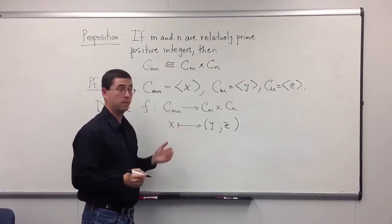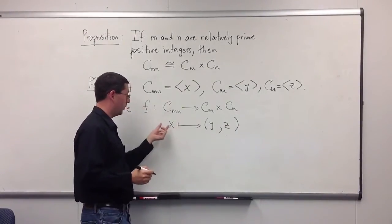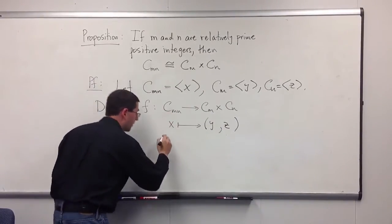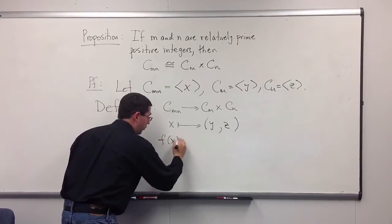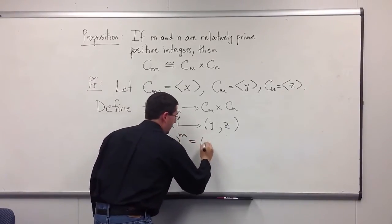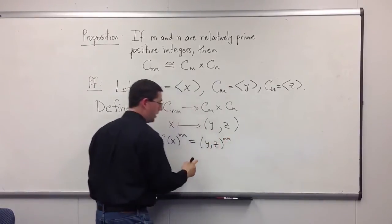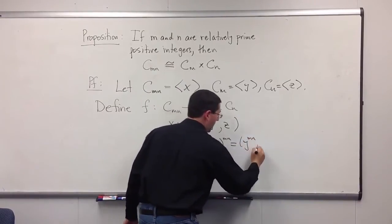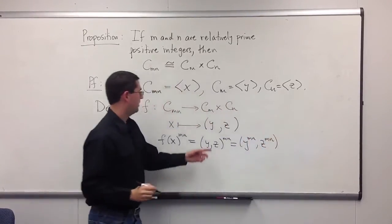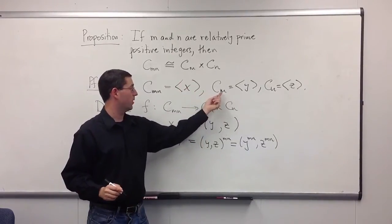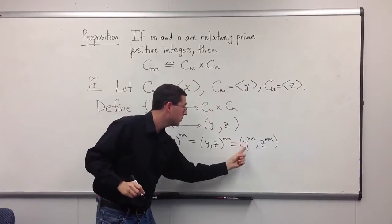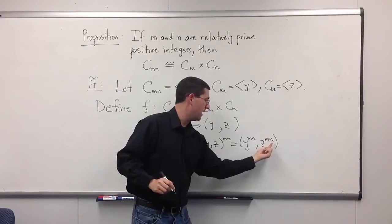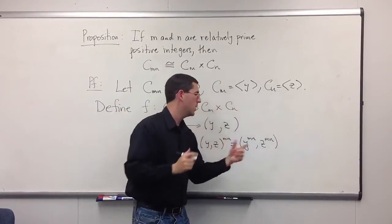To make sure this is a homomorphism, we're going to check whether f of x raised to the mn equals the identity element. So f of x to the mn will be (y, z) raised to the mn. We do it component by component and get (y^mn, z^mn). Since y is a generator for the cyclic group of order m, y has order m, so y to the m is the identity. Similarly, since z has order n, z to the mn — the same as (z^n)^m — will also be the identity.